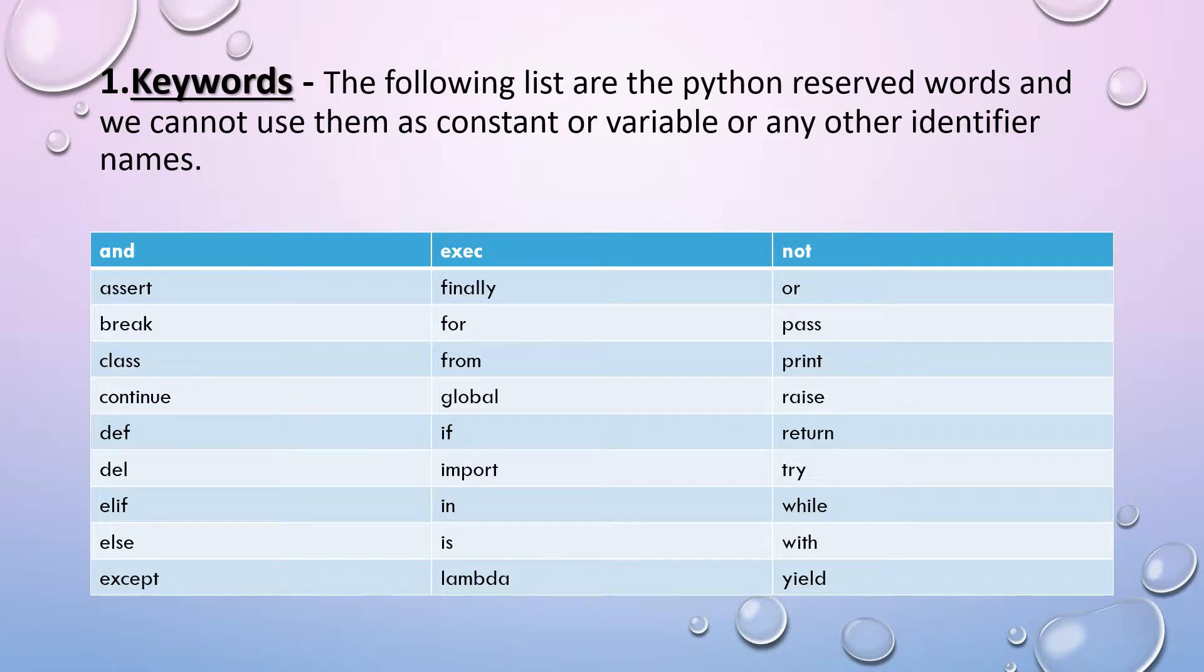Firstly, we will start from the keywords. So keywords are the reserved words and they cannot be used as constant or variable or any other identifier names. Here the list shows the keywords that are used in Python. They are assert, break, class, continue and etc. These keywords cannot be used as an identifier means they cannot be used to initialize a value or cannot be used to declare any name.